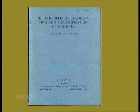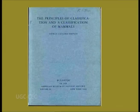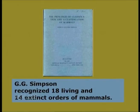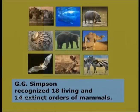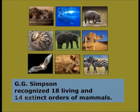Simpson provided a complete review of the group in the publication entitled 'The Principles of Classification and Classification of Mammals.' He recognized 18 living and 14 extinct orders of mammals. Here we discuss the most adapted classification describing only the 18 living orders of mammals.